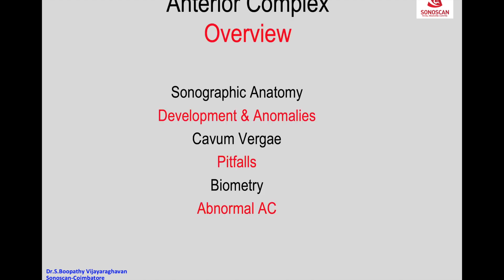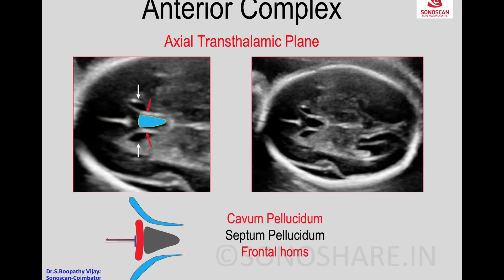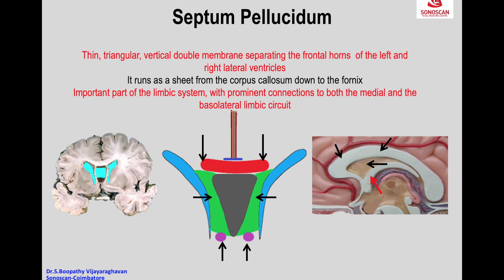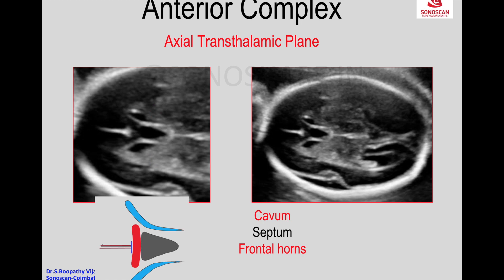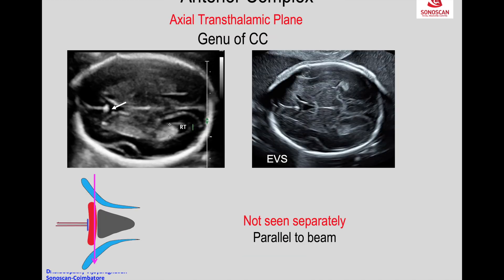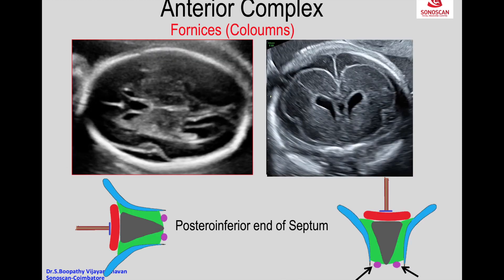This is how this lecture is divided. On the side of the septum pellucidum we see the frontal horns, closely opposite connections to both the medial and the basolateral. The CSP does not communicate with the subarachnoid space or with the ventricular cavity outside. On endovaginal scan you will see the genu of the corpus callosum and the columns of the fornices.